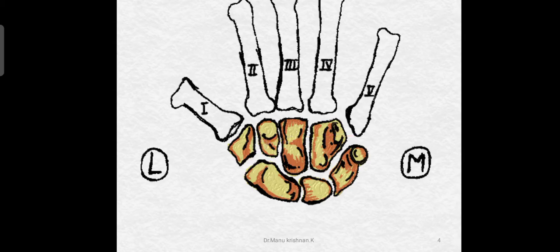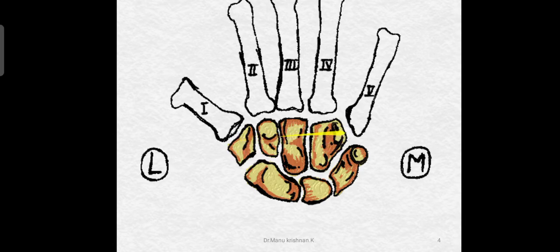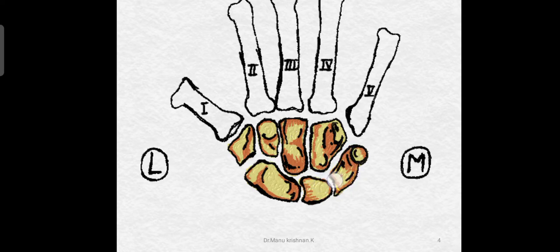Here we have a representation of the carpal bones and you can see how they are arranged. There is a proximal row closer to the body, then we have a distal row. Starting from the proximal row, lateral to medial, we have the scaphoid, then the lunate, then the triquetral, and at the end of the triquetral you can see a small round bone overlying it — that is the pisiform. That defines the proximal row of carpal bones.